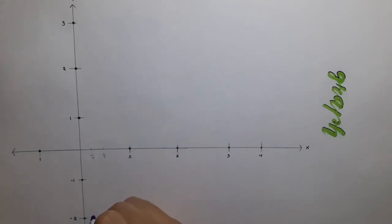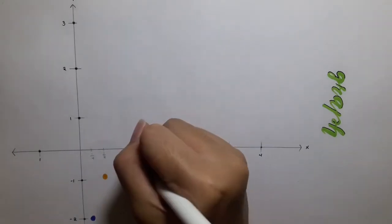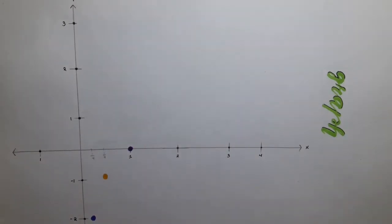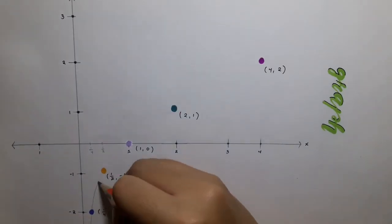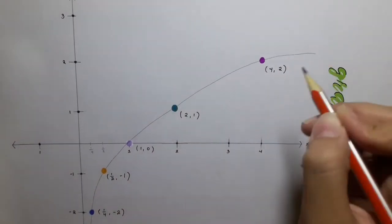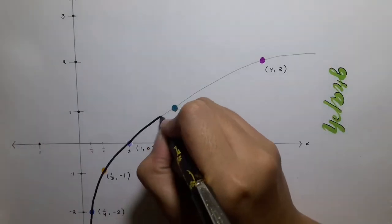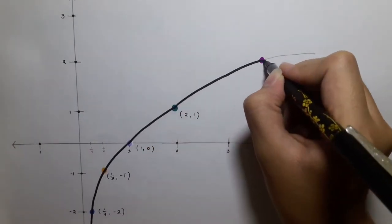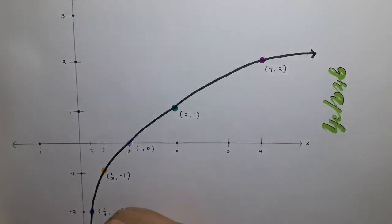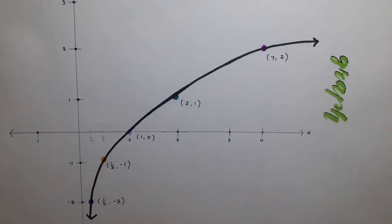Let's go to graphing. To graph, simply follow the x and y values that were stated in the table of values previously, and then plot it, and connect it with a smooth curve. And that's how you find the table of values and how to graph for the equation logarithm of x with a base of 2.